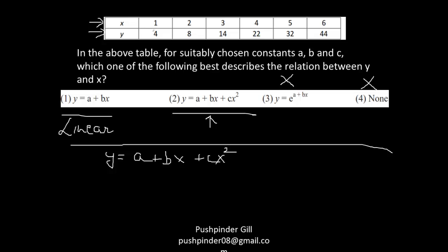Now y = a + bx + cx², right? So if x = 1, y = 4. So put 4 = a + b + c when x = 1. Now I've got this equation, right?